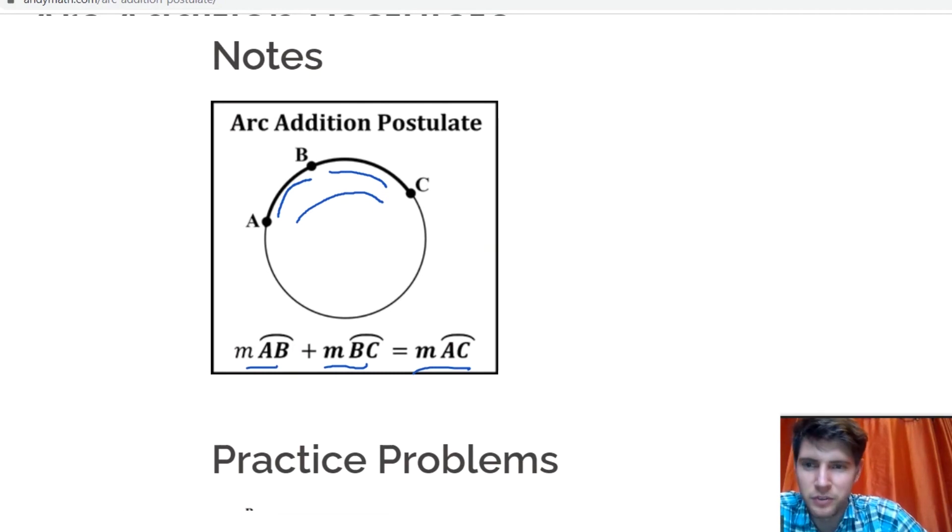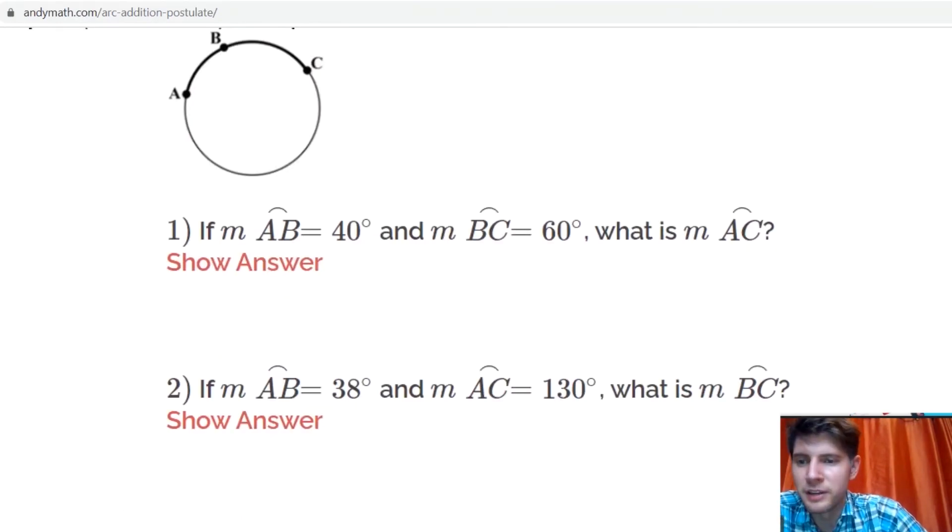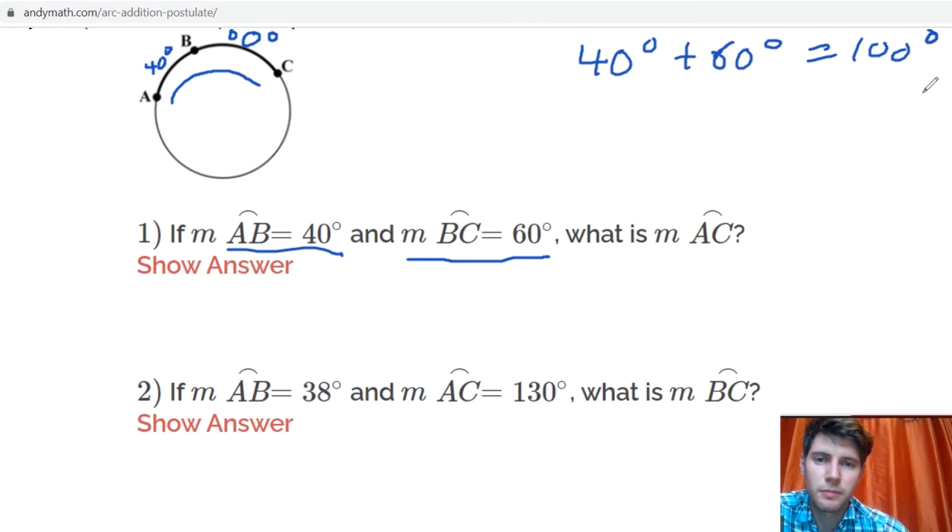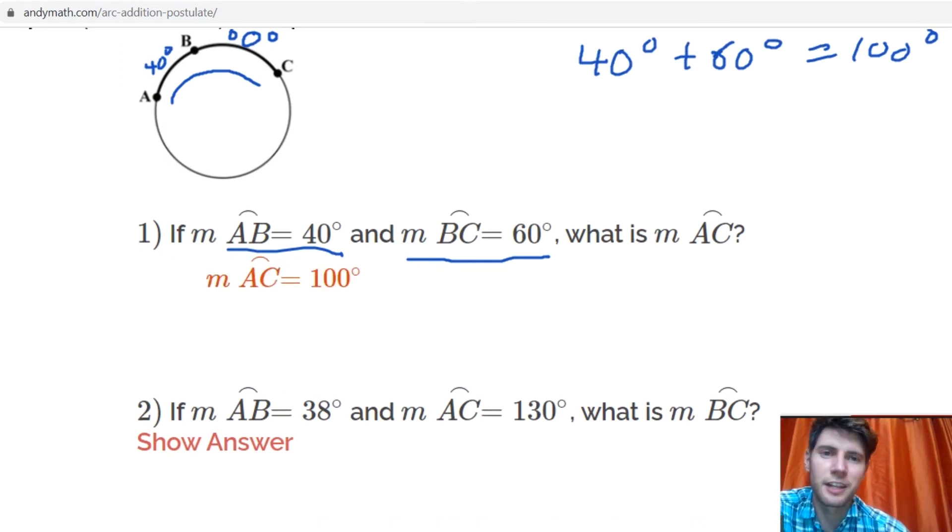So let's just do two problems for this. Number one says the measure of AB equals 40. So what that's saying is this arc right here is 40 degrees. And then it says the measure of BC is 60. So that means this arc right here is 60 degrees. And they want to know what is AC, what is the whole thing. We're just going to add 40 degrees plus 60 degrees and that gives us 100 degrees. So arc AC is 100 degrees. And that's how to do that one.